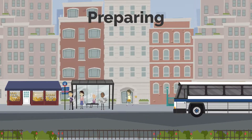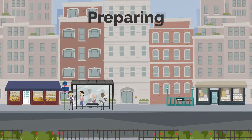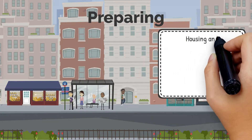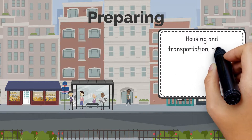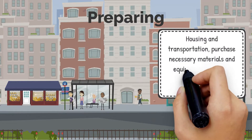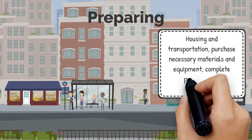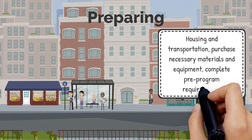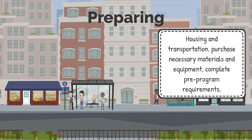Number six: preparing for the program. Once you have accepted an offer, you can begin preparing for your doctoral program. This may involve arranging for housing and transportation, purchasing necessary materials and equipment, and completing any pre-program requirements.